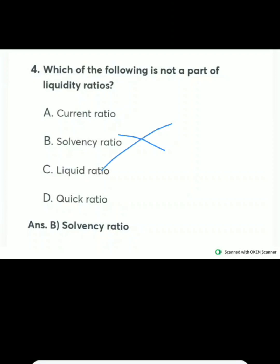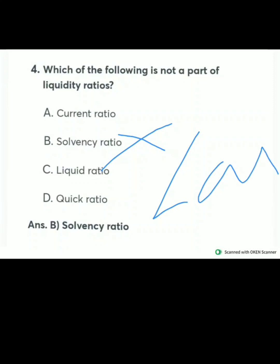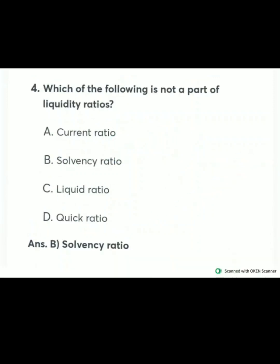Liquidity ratio shows the short-term solvency position of the firm, whereas solvency ratio shows the long-term solvency of the firm. So here option B is the correct answer.